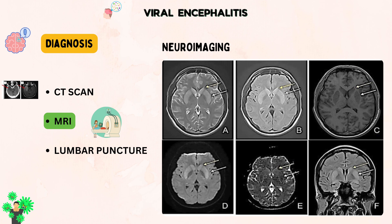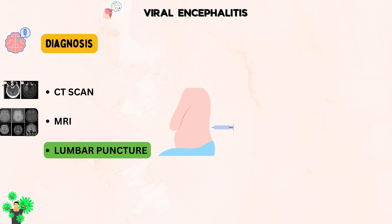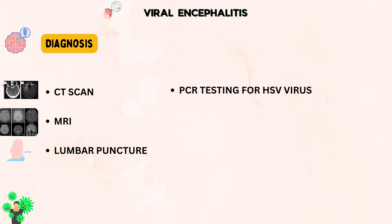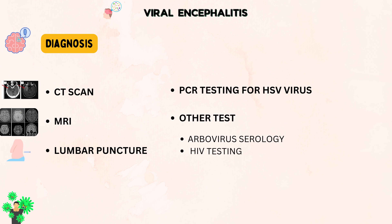MRI is highly sensitive in detecting signs of HSV encephalitis, especially in the temporal and frontal lobes. Analyzing cerebrospinal fluid obtained from a lumbar puncture helps check pressure, cell counts, glucose, and protein levels. It's also important for PCR testing to detect HSV-1, HSV-2, and other viruses like enteroviruses. Depending on a person's history and symptoms, additional tests like arbovirus serology and HIV testing may be recommended. Sometimes, taking a sample of brain tissue or body fluids for cultures and PCR can also help determine the cause of the illness.